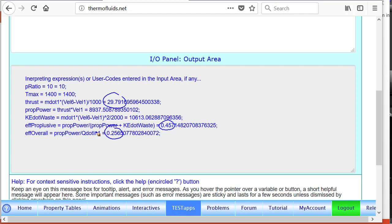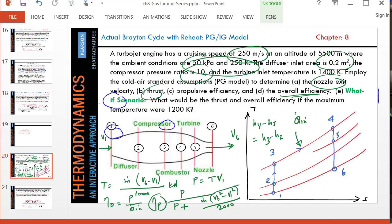So notice that the propulsive efficiency can't reach 100 percent if the wasted kinetic energy is zero, and how can that happen if v6 and v1 are equal? The propulsive efficiency will be very high. So think about it for a second that if v6 and v1 are almost equal, that means what is v1? That's the speed of the aircraft. And what is v6? It is the jet velocity at which speed the jet is going out.